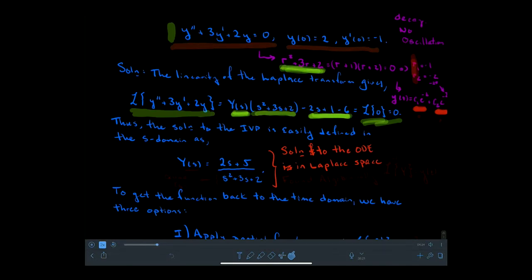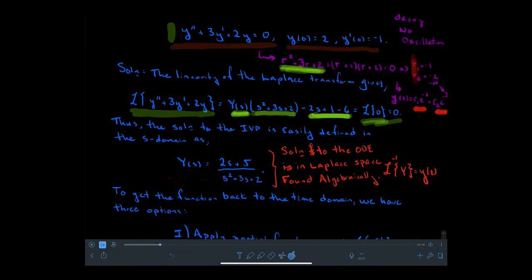Now that we have the solution to the problem in Laplace space, found algebraically, what we want to do is map capital Y back to little y. We want to perform an inverse Laplace transform that gets us out of the S domain — where the solution was found naturally — to the T domain, where the solution should live, since the problem was formulated in the T domain.